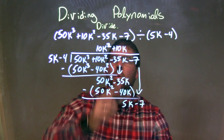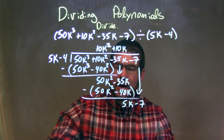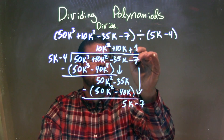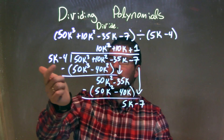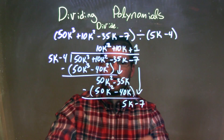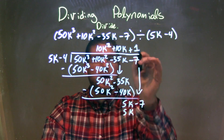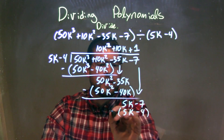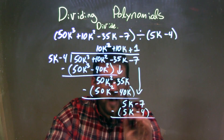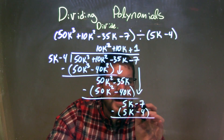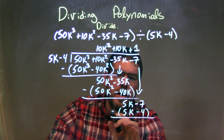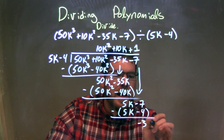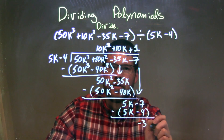Same thing — what times 5k is 5k? And that one's just 1. A little 1. 1 times 5k is 5k, and 1 times minus 4 is minus 4. Let's subtract the top and the bottom here. 5k minus 5k is just 0. And negative 7 minus a negative 4 — that gives me a positive 4, so it's minus 3. That minus 3 is my remainder.